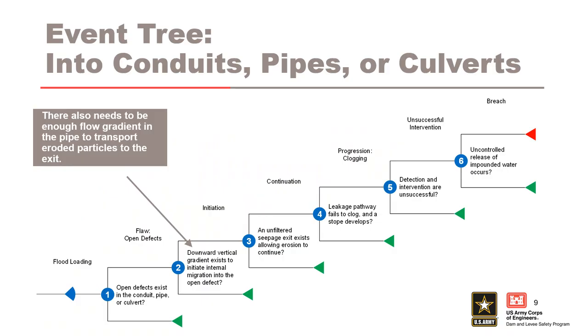Here is the event tree for evaluating internal migration into conduits, pipes, or culverts. Node 1, the flaw node: an open defect exists in the conduit, pipe, or culvert.